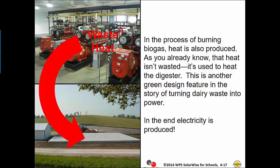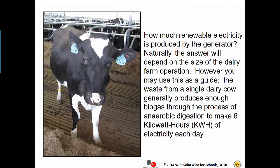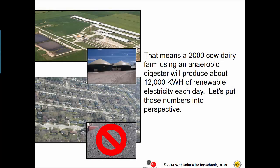In the end, electricity is produced. How much renewable electricity is produced by the generator? Naturally, the answer will depend on the size of the dairy farm operation. However, you may use this as a guide: the waste from a single dairy cow generally produces enough biogas through the process of anaerobic digestion to make six kilowatt hours of electricity each day. That means a 2,000 cow dairy farm using an anaerobic digester will produce about 12,000 kilowatt hours of renewable electricity each day.